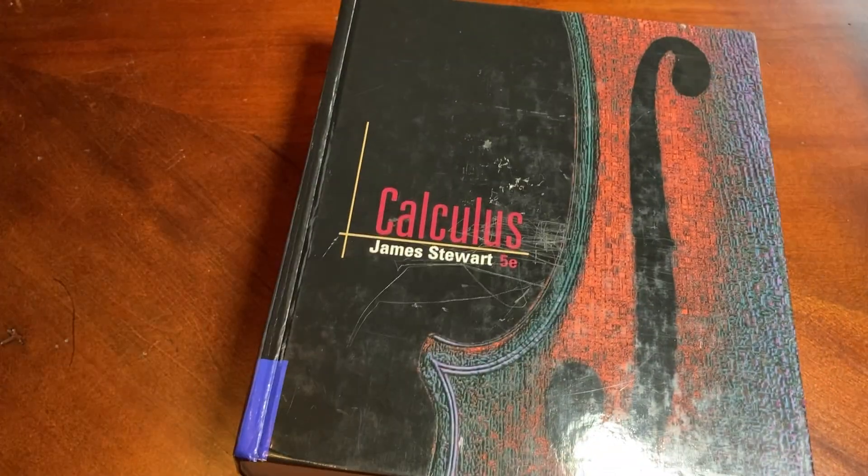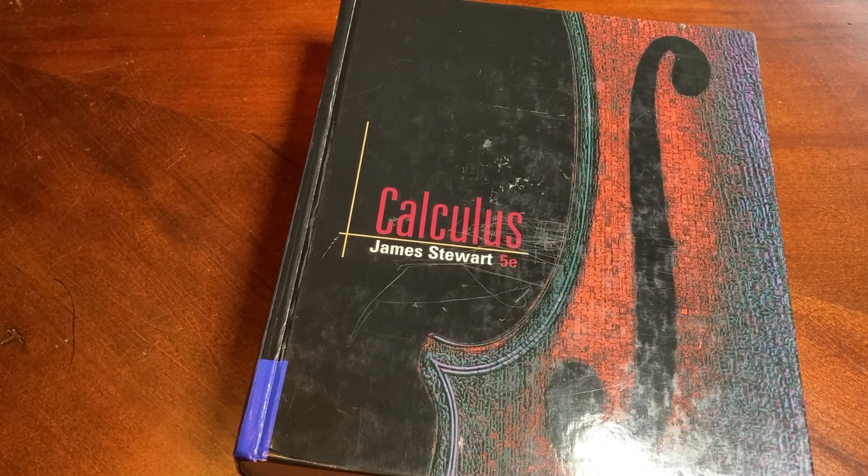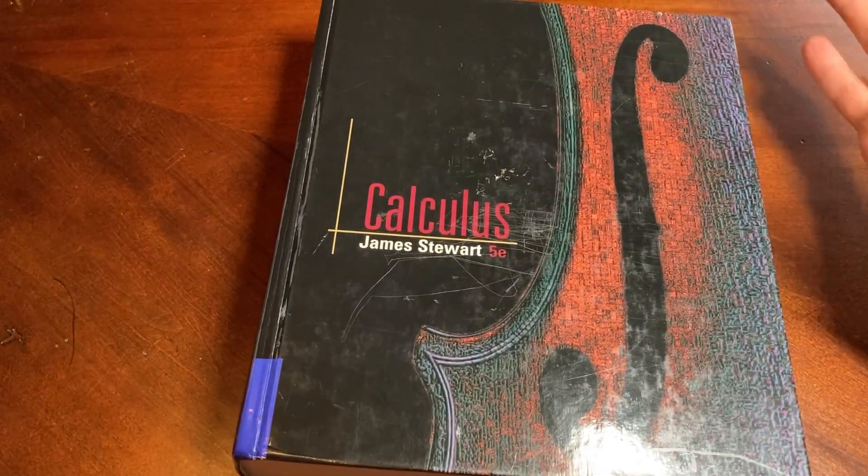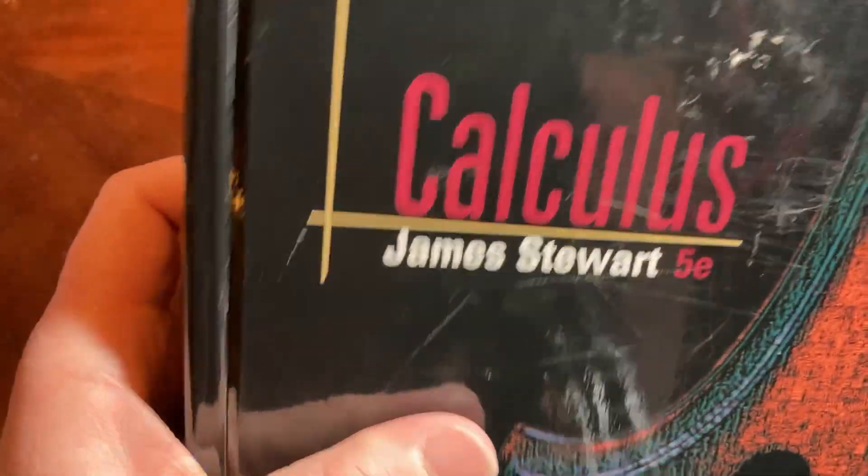You can Google him. He's on Wikipedia. Anyone can make it on Wikipedia, but I always think he's really famous, right? James Stewart, Calculus, fifth edition.